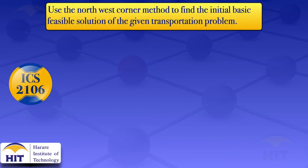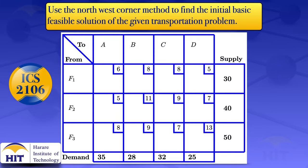In this tutorial, I'm going to use the Northwest Corner Method to find the initial basic feasible solution of the transportation problem. That is three sources — F1, F2, and F3 — and four destinations: A, B, C, and D.